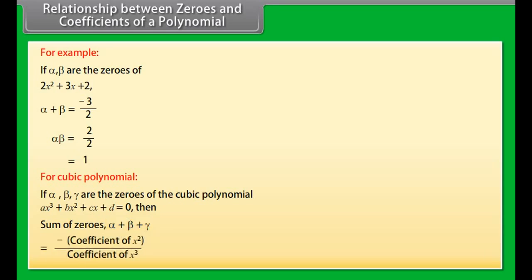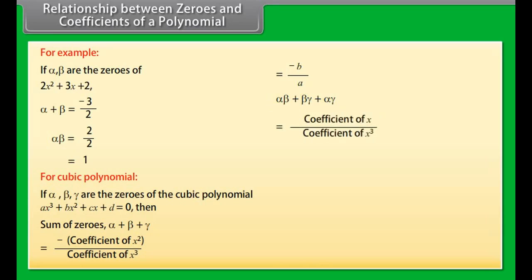For example, if α and β are the zeros of 2x² + 3x + 2, then α + β = −3/2 and αβ = 2/2 = 1.